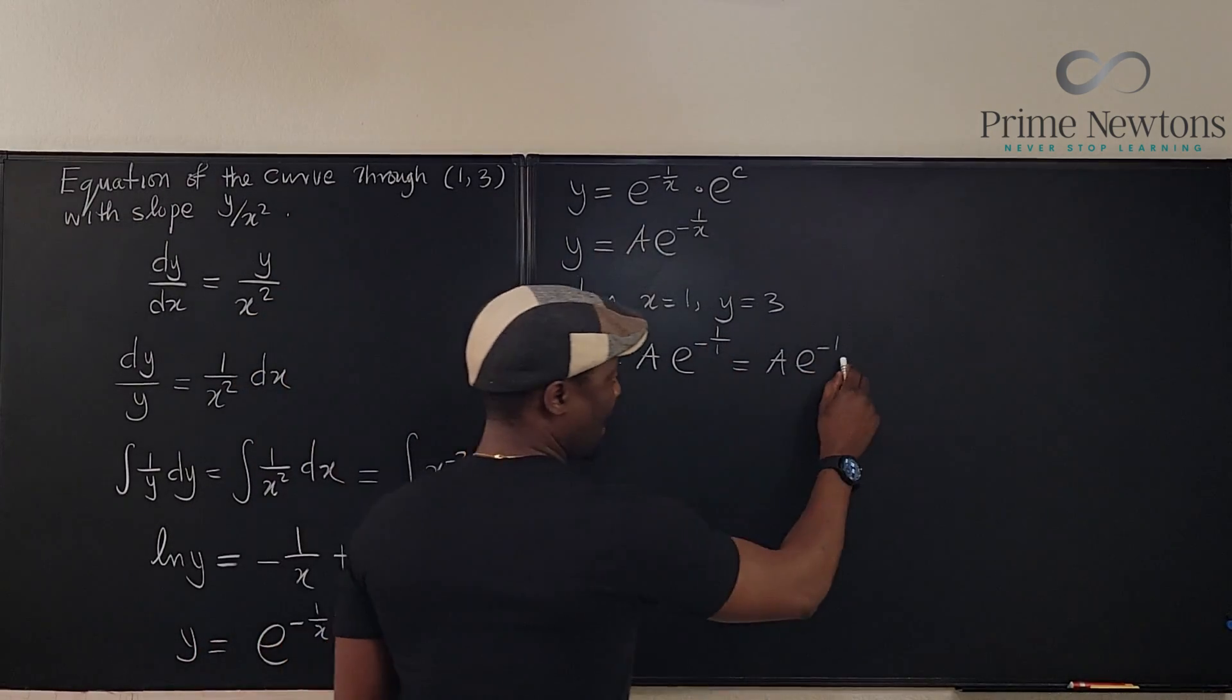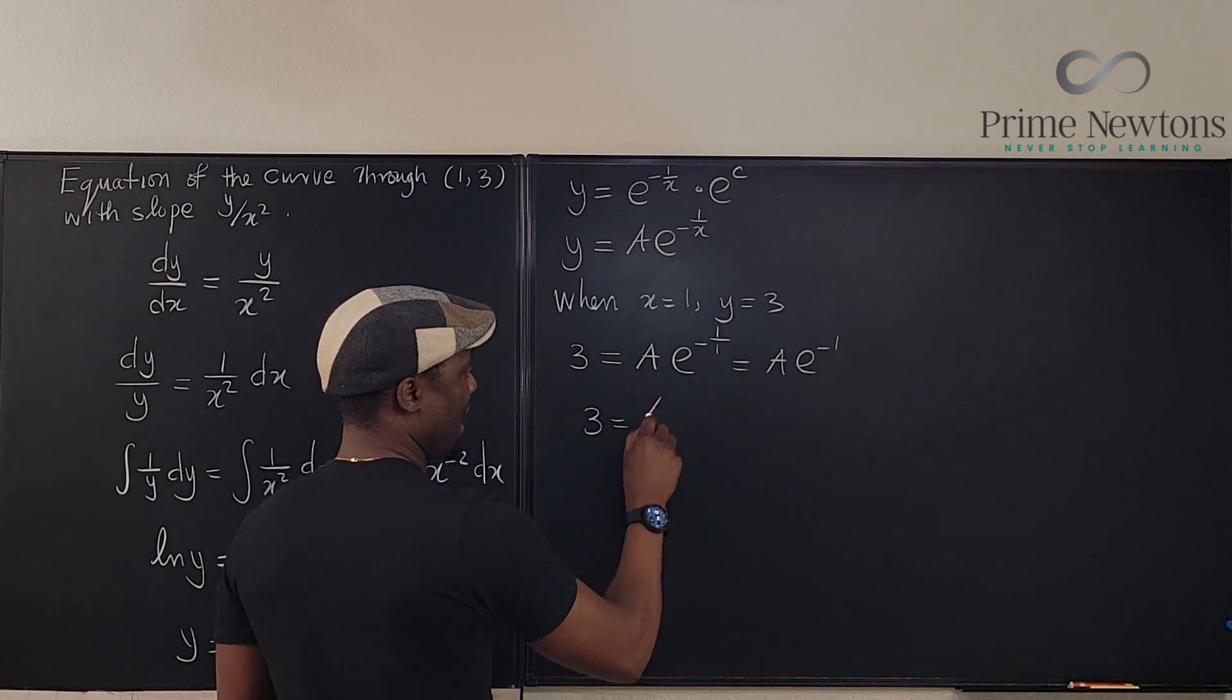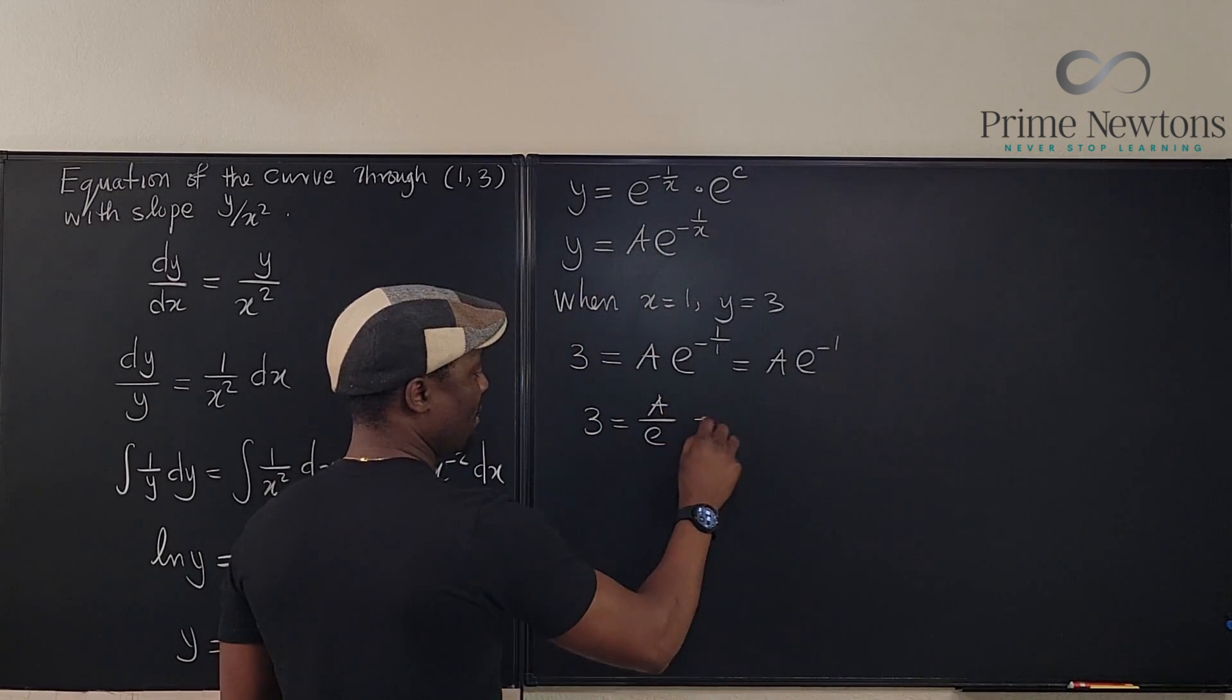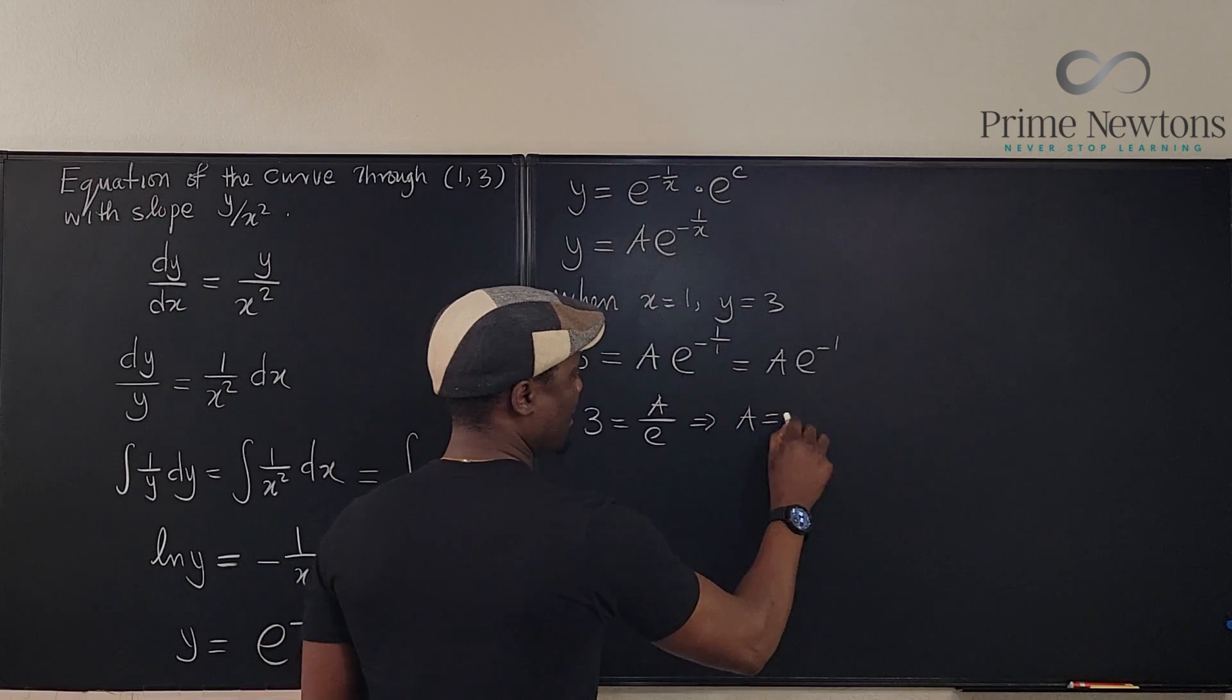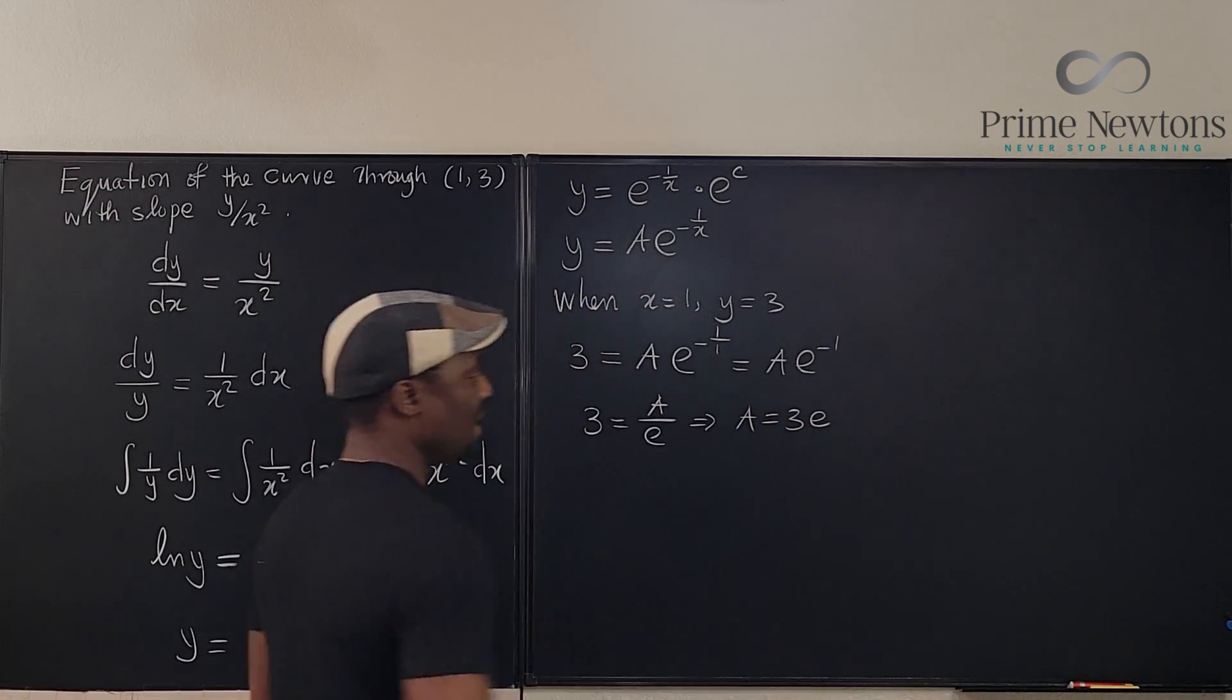Which is the same thing as, so we can say 3 equals a over e, which implies a is equal to 3e. So, we're done.